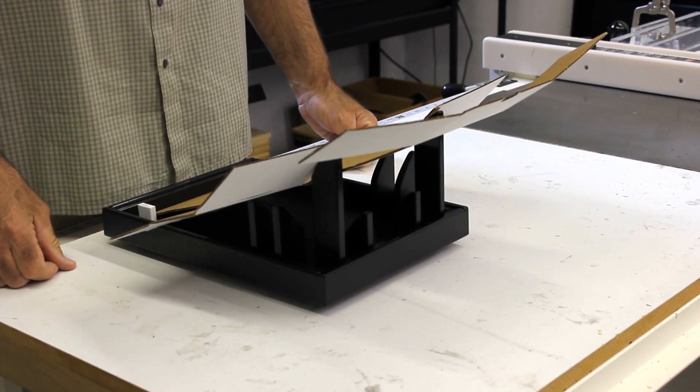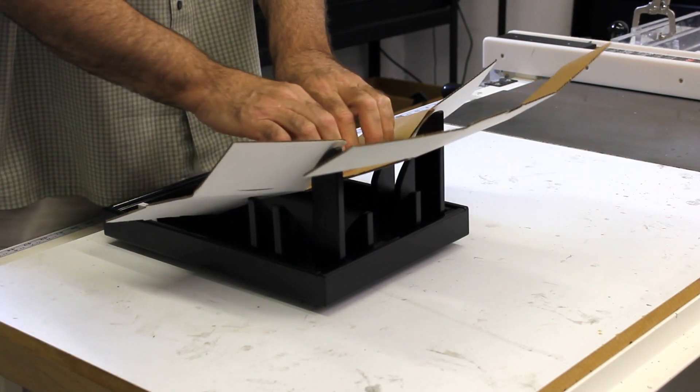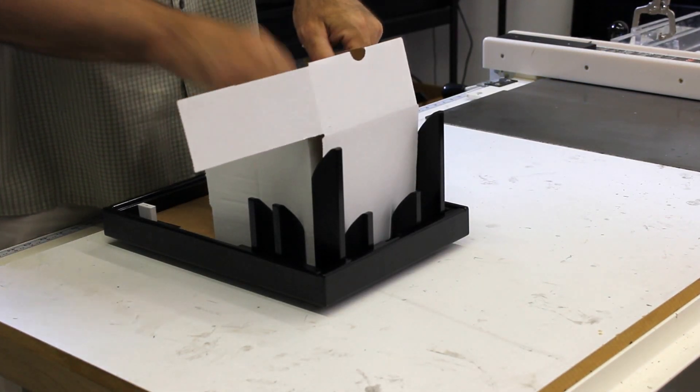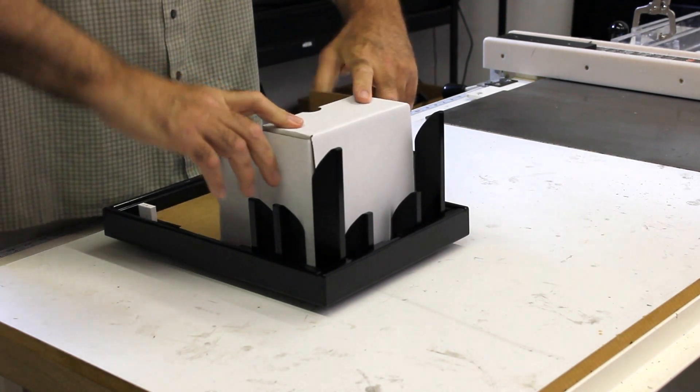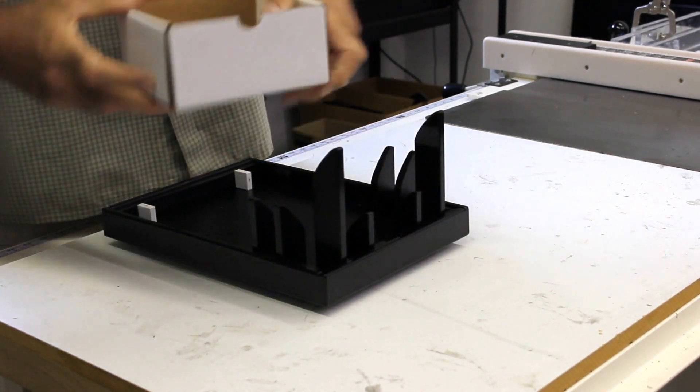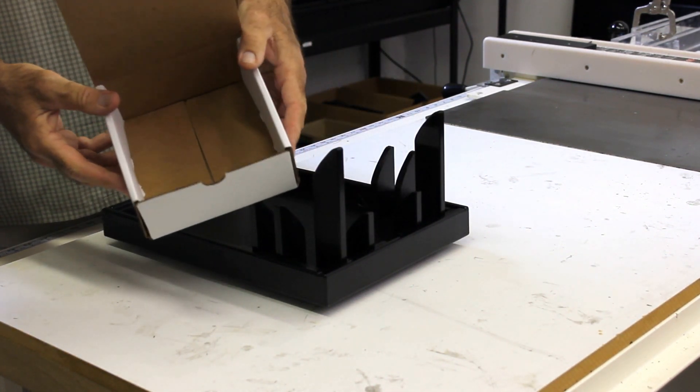After that, we're just going to apply pressure, we're going to fold our top tabs, fold our side tabs, and you have your folded box.